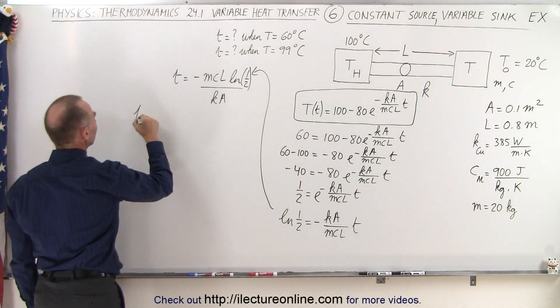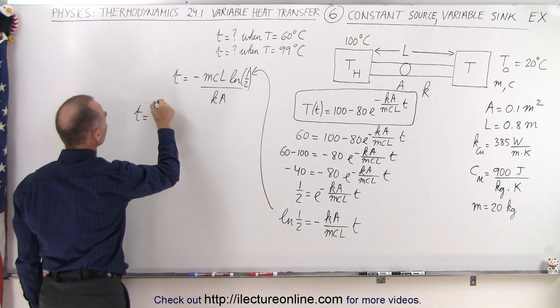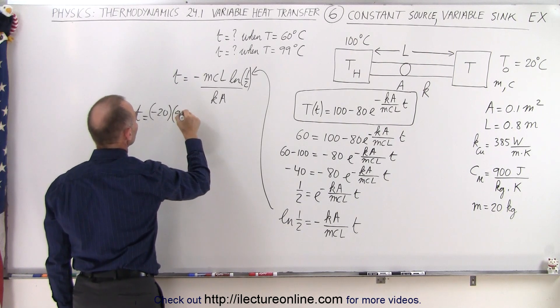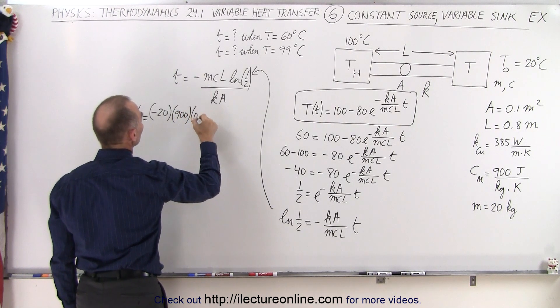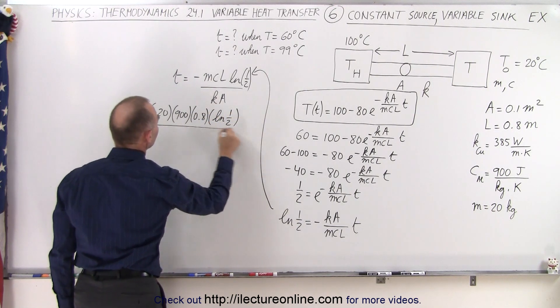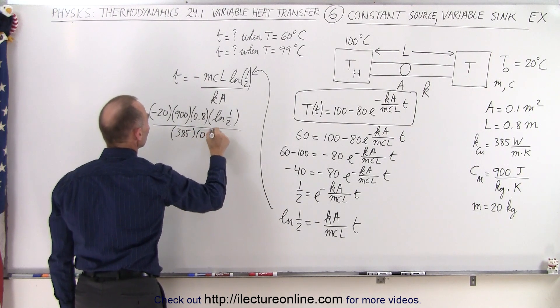And so finally, time equals minus 20 times C which is 900 times L which is 0.8, the natural log of one half, and all divided by K which is 385, and A which is 0.1.